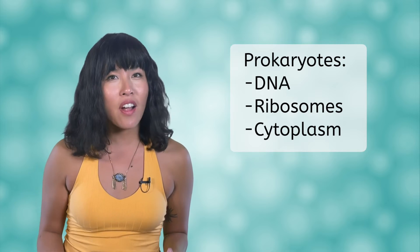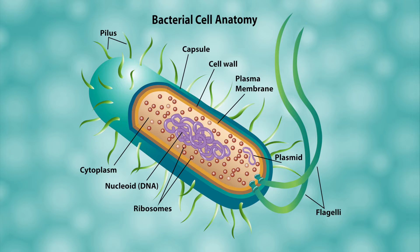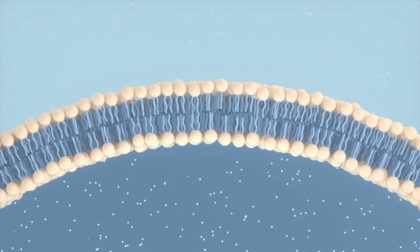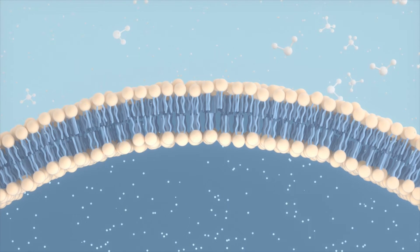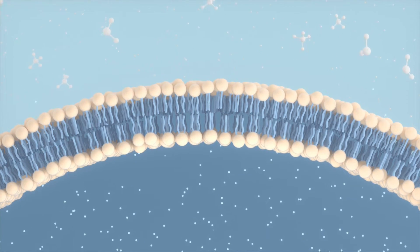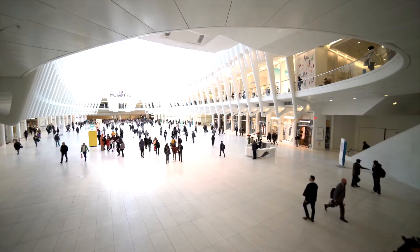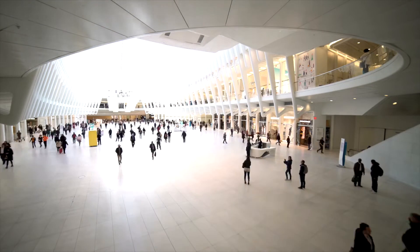However, prokaryotic cells look much more complicated on the outside. In the diagram, notice that the outside of the cell is made of three distinct layers. The innermost layer is the cell membrane, also called the plasma membrane. We'll talk about its structure in a later lesson, but for now know that it's a double layer of lipids — another macromolecule from Unit 2 — and that its main job is to control what gets in and out of the cell.